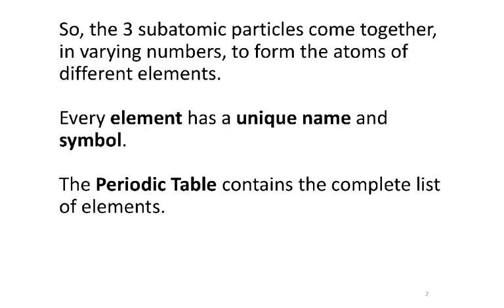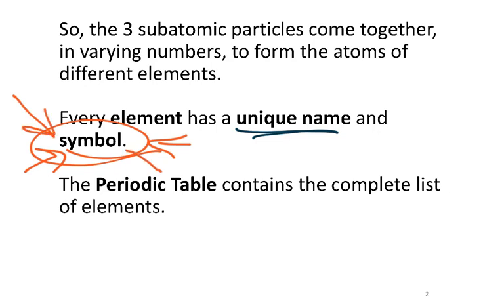Quick review. Protons, neutrons, and electrons come together to form all of the elements that exist. Each element has a unique name and a unique symbol. Please remember that although the symbols are made of letters, they're still symbols, and when you change the case of a letter that's part of a symbol, you've changed the symbol. The periodic table of elements is a complete list of all of the elements that exist naturally as well as the ones that we human beings have created in super colliders.